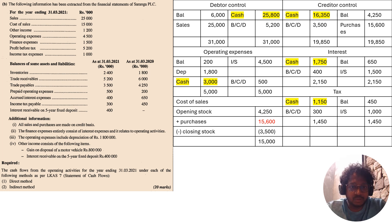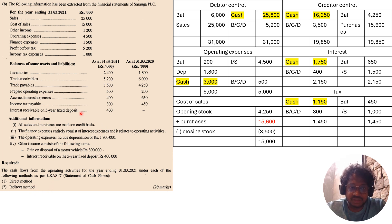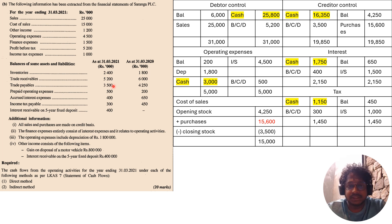This is a 2021 cash flow statement question. The information is given and they are asking to prepare cash flows from operating activities using both the direct method and the indirect method. This is a bit different compared to other past papers because here you have to prepare operating activities under both methods. We will look at the direct method first.